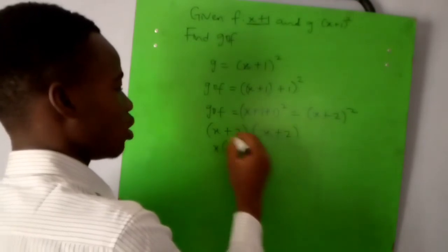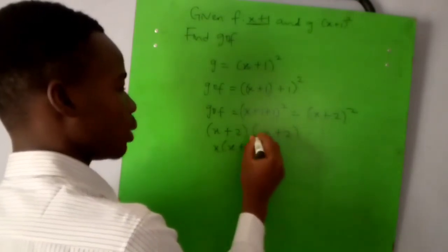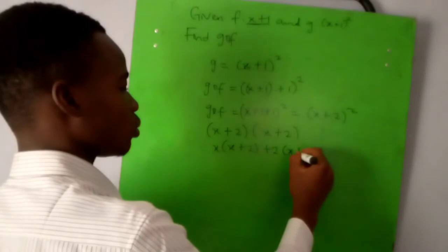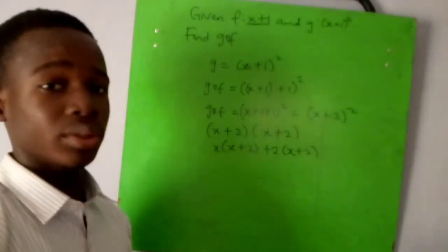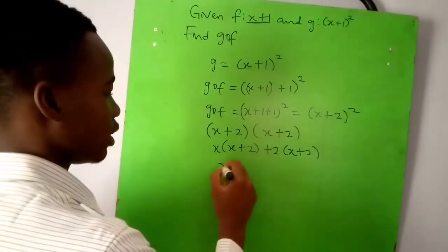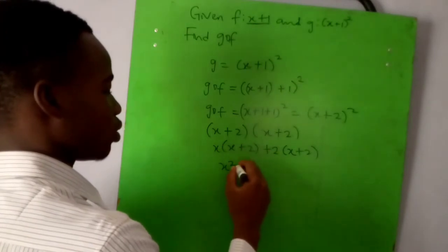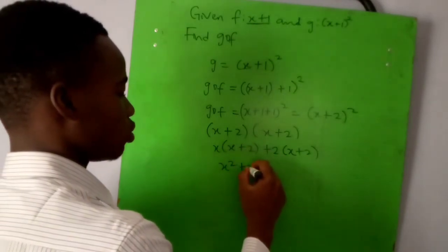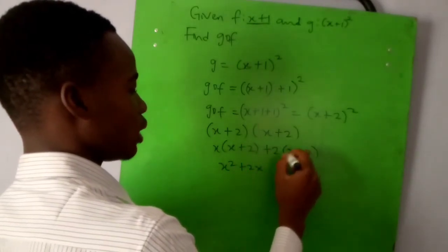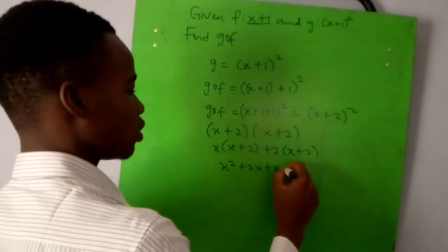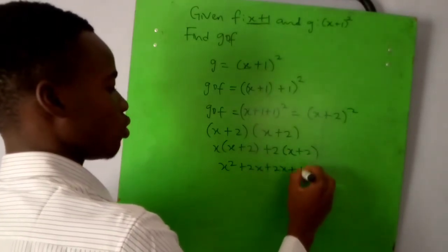X times two is 2x, two times x is 2x, two times two is 4. So we have x^2 + 2x + 2x + 4.